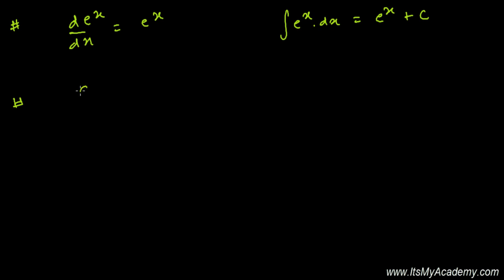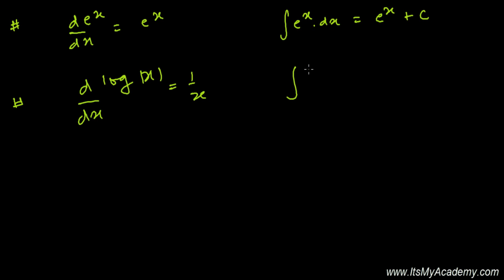Similarly, the derivative of log of the absolute value of x with respect to x is 1 over x. So based on that, our formula becomes: the integral of 1 over x dx equals log|x| plus C.